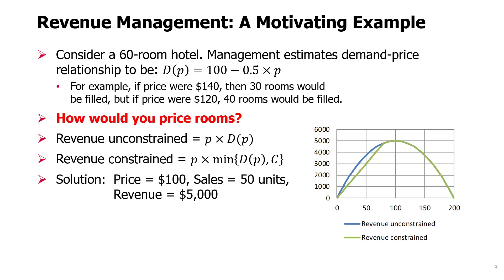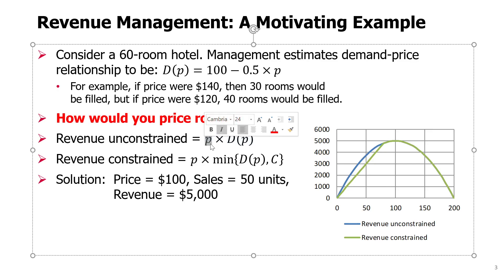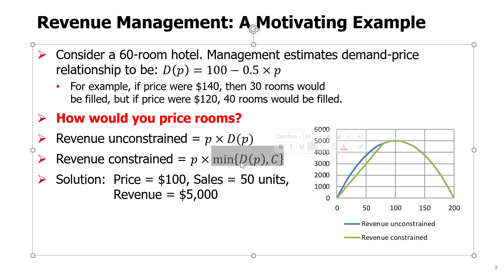When you set the price very high, like $200, your demand becomes zero, and it doesn't matter that you have a very high revenue per unit — you don't sell anything and obtain no revenue. So it makes sense to reduce the price, but when you reduce the price you're losing on price while gaining on sales. On the other extreme, if you set the price to zero, you'll have the highest demand of 100, but revenue is again zero. So the optimal solution is somewhere in between — set a price that yields reasonably high demand at a reasonably high price — and this quadratic function shows that happens at exactly $100.